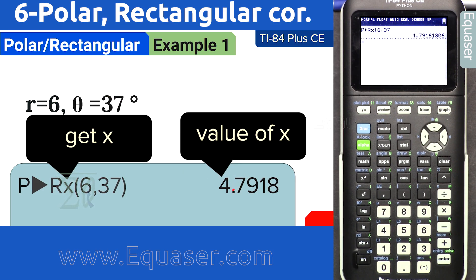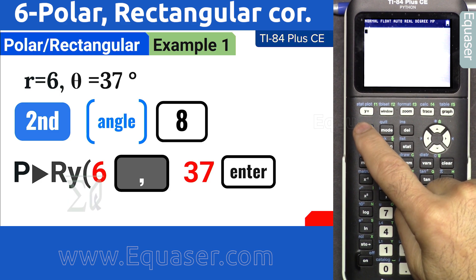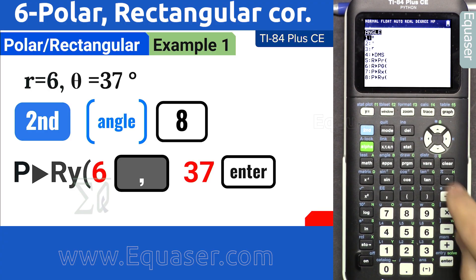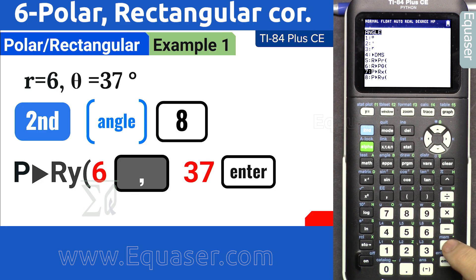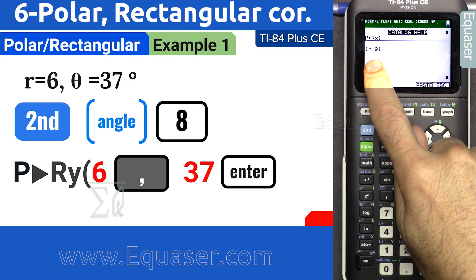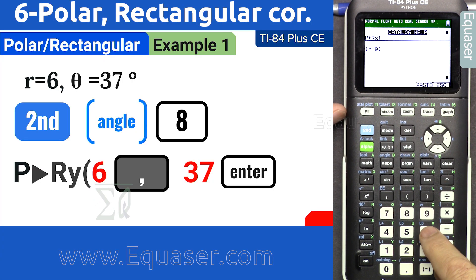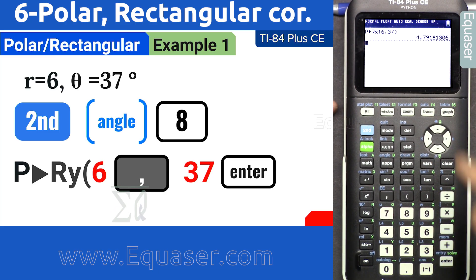To remind you, when I press second function and angle, for example I want to get x, you can press plus symbol, and the help will appear here, which means enter r comma and theta. You can continue here: 6 comma 37 enter. This will come and help you.